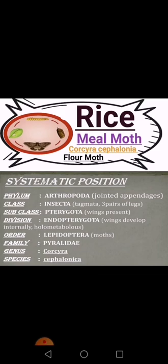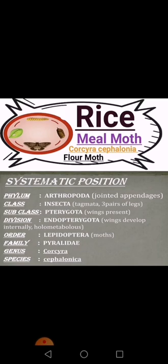Let's see the systematic position. About phylum Arthropoda — Arthropoda contains jointed appendages. Class is Insecta, that is Hexapoda, with three pairs of legs. Subclass is Pterygota, which contains wings present. Division is Endopterygota — wings are developed internally and the insect is holometabolous. Holometabolous is a condition of metamorphosis in which four stages are passed: egg, larvae, pupae, and adult.